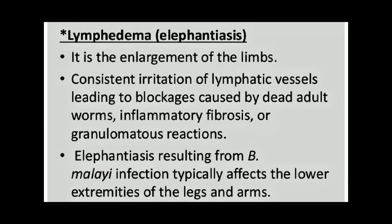The next one is lymphedema. It is the enlargement of the limbs from consistent irritation of lymphatic vessels, leading to blockages caused by dead adult worms, inflammatory fibrosis, or granulomatous reactions. Elephantiasis resulting from Brugia malayi infection typically affects the lower extremities of the legs and arms.